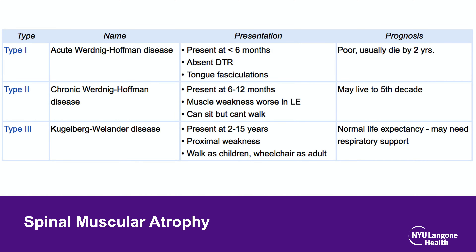SMA is classified by type. Type 1 children typically die by about 2 years of age. Type 2 — the chronic Kugelberg-Welander type — presents around 1 year of age; muscle weakness is worse in the lower extremities, and patients can live into their 40s. Type 3 typically presents in the pre-pubertal years; children walk but use wheelchairs as adults, often with normal life expectancy.